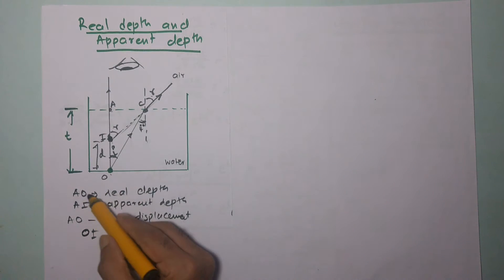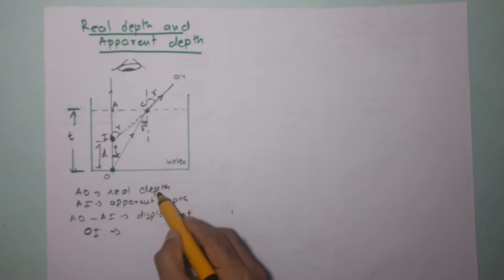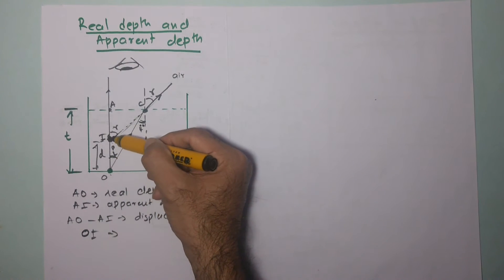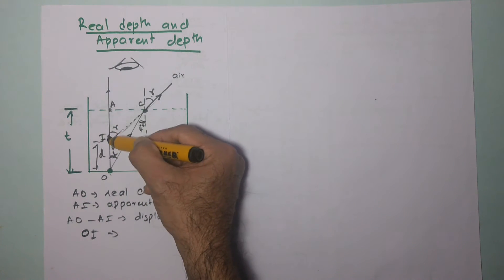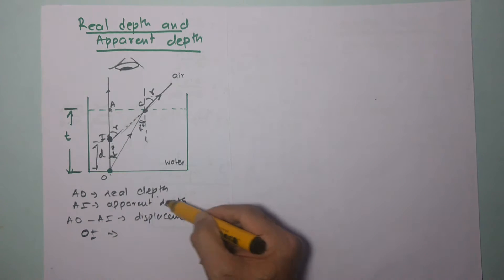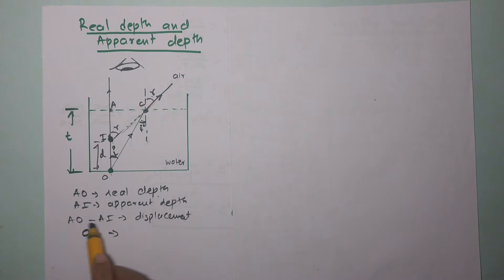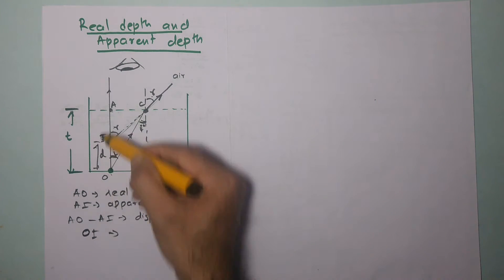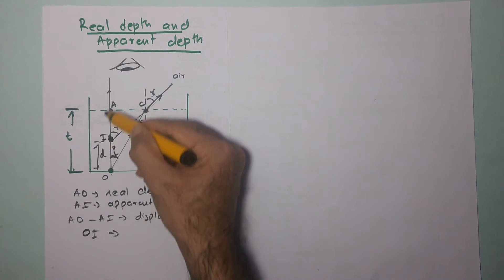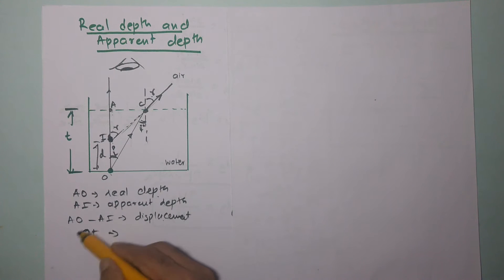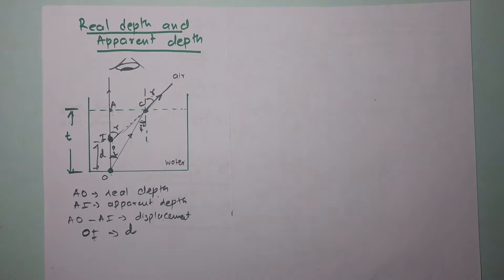OA is the real depth. AI is the apparent depth. OA minus AI is the displacement OI, which is equal to distance t.